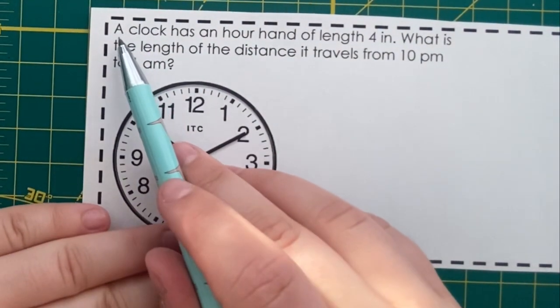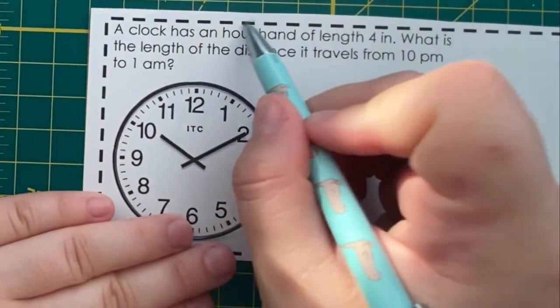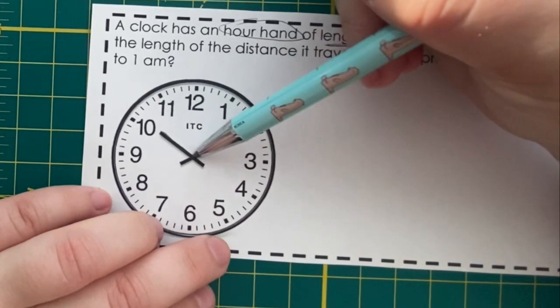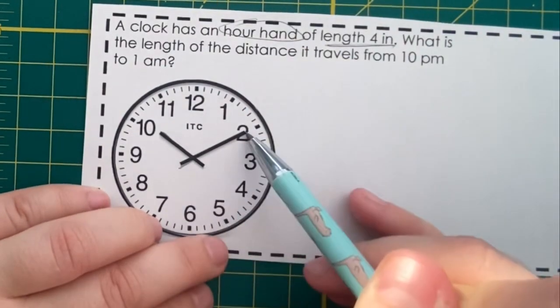This first problem says a clock has an hour hand of length 4 inches. That's the short hand on the clock. The long hand is the minute hand.